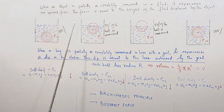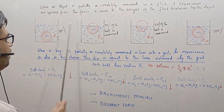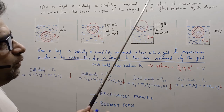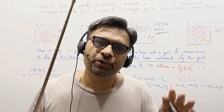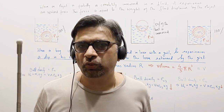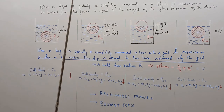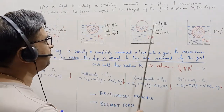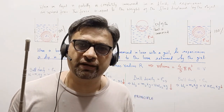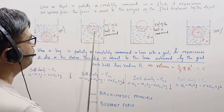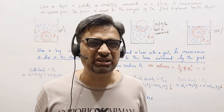Archimedes' principle states that when an object is partially or completely immersed in a fluid — which can be a gas or liquid, in this case water — it experiences an upward force. Archimedes' principle quantifies this force: it says this force is equal to the weight of the liquid or fluid displaced by the object.